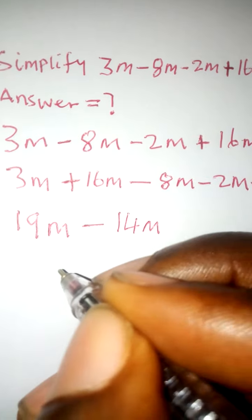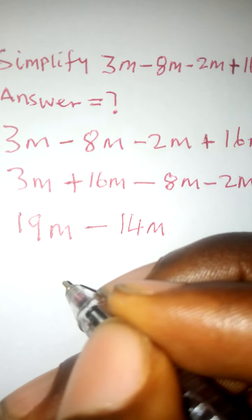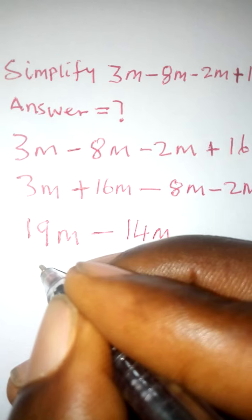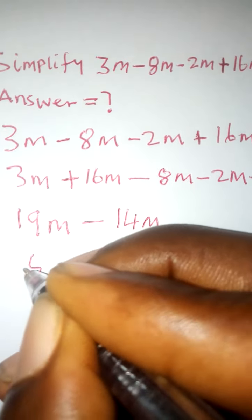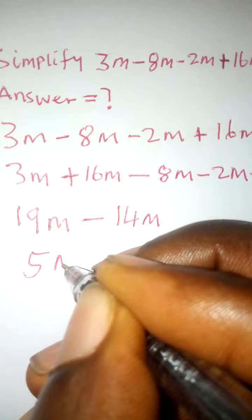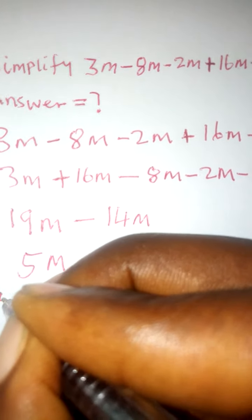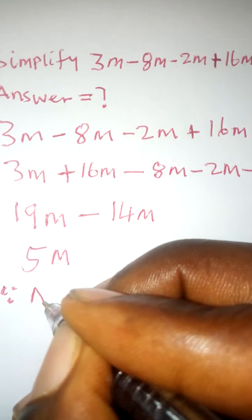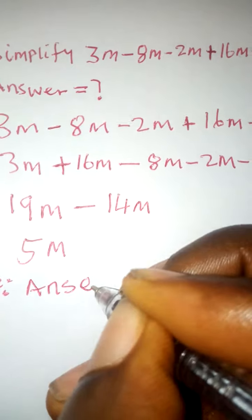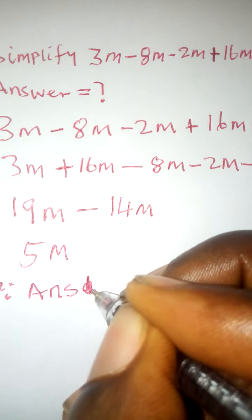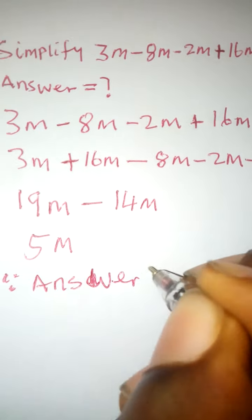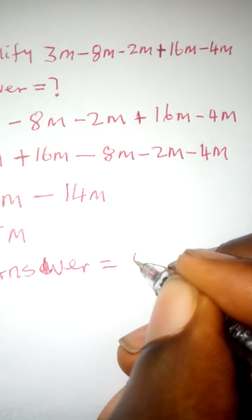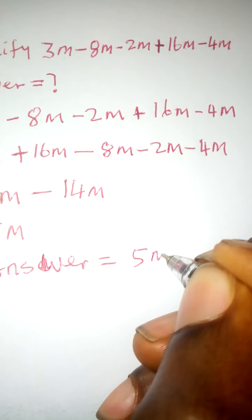So since the letters are the same, I will have my answer. 19 minus 14 is 5m. Therefore the answer is 5m.